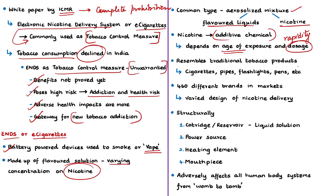ENDS or e-cigarettes are manufactured to resemble traditional tobacco products like cigarettes, pipes and cigars, and also common gadgets like flash drives, flashlights or pens. According to ICMR, there are currently more than 460 different e-cigarette brands in the market, all with varied designs of nicotine delivery. Structurally, most e-cigarettes contain four components: a cartridge or reservoir holding a liquid solution with nicotine, flavorings and other chemicals; a power source (usually a battery); a heating element; and a mouthpiece that the person uses to inhale.